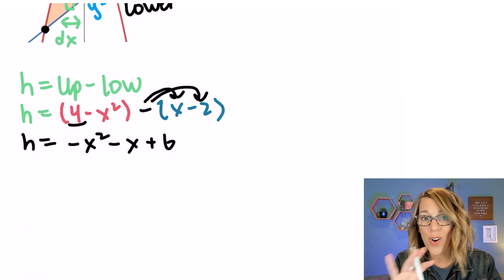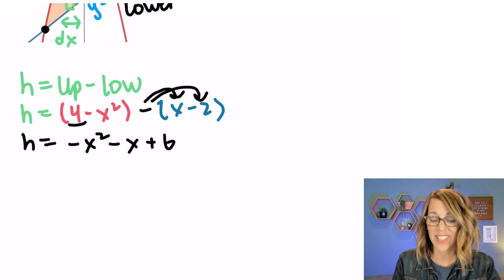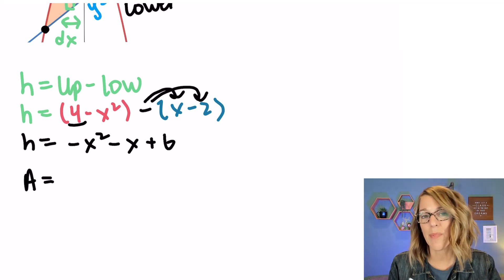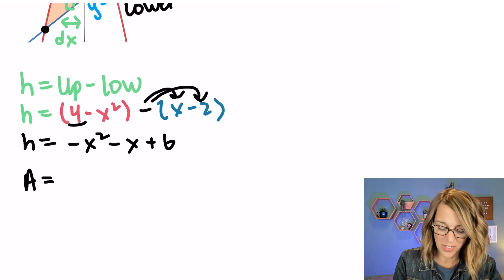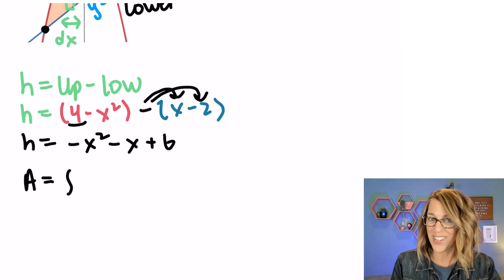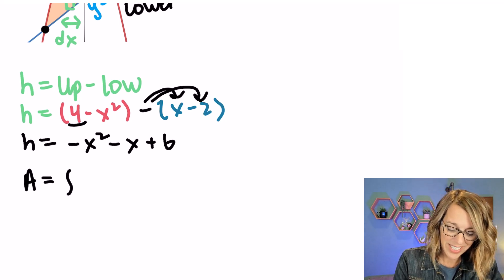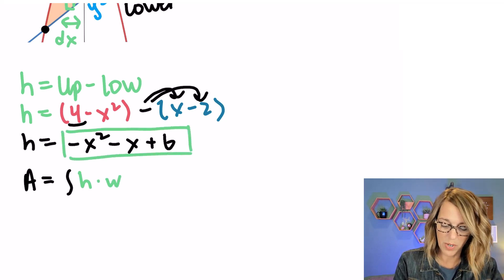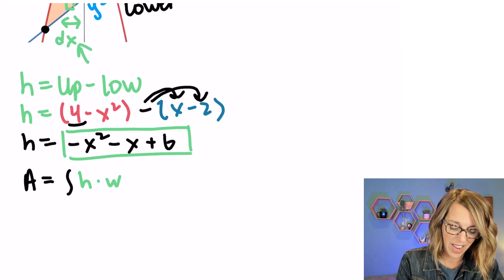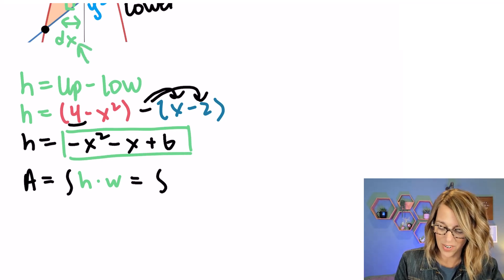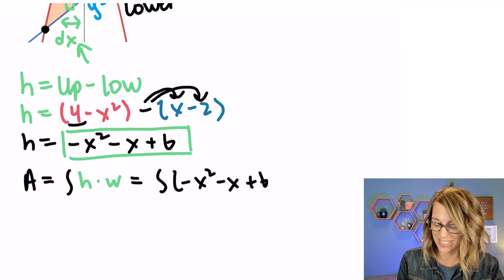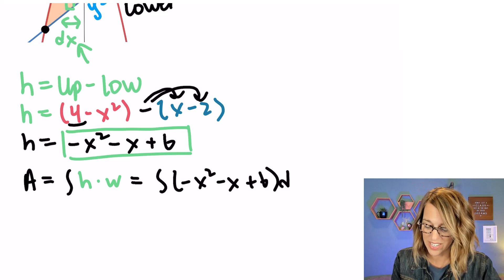Let's put the area together for all of these rectangles — we're going to have infinitely many of them — so that total area is going to be the sum of all of those areas, and we can use an integral for that. We still need our limits of integration, but inside the integral we have height times width: the difference between my functions times dx. So we get the integral of (negative x squared minus x plus 6) dx.